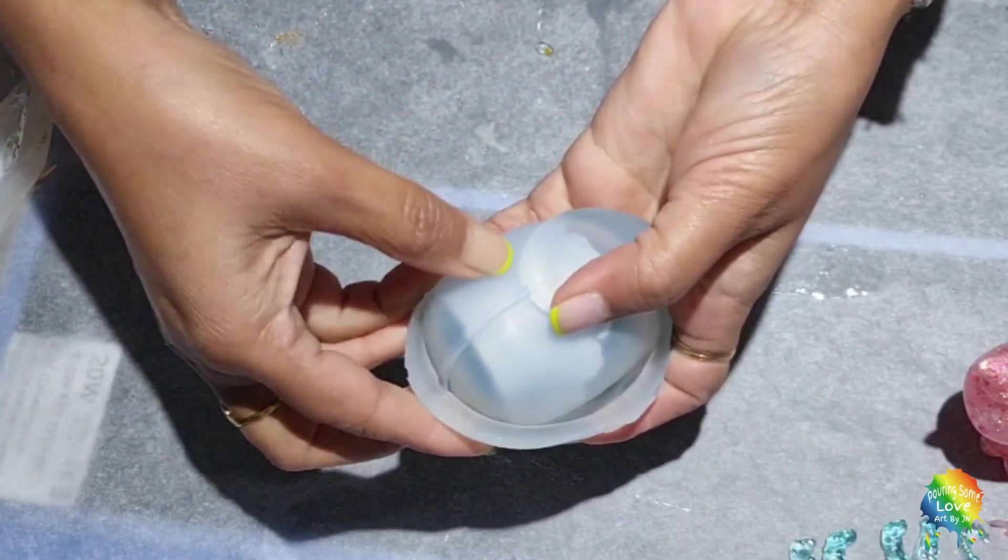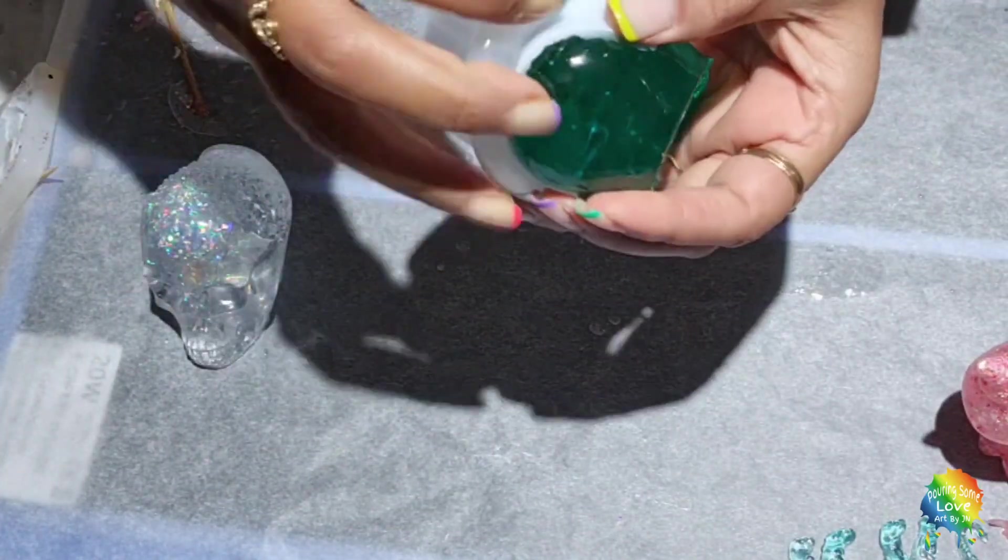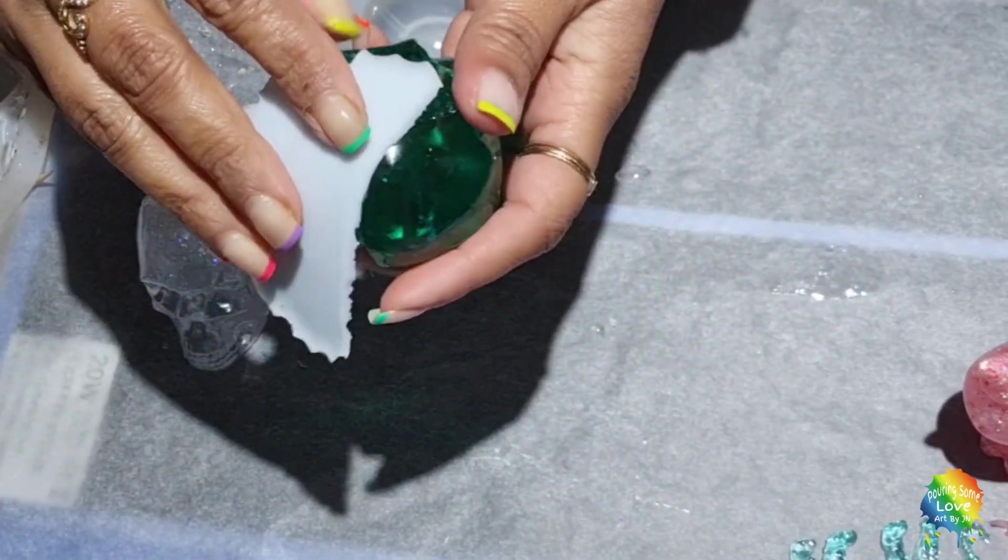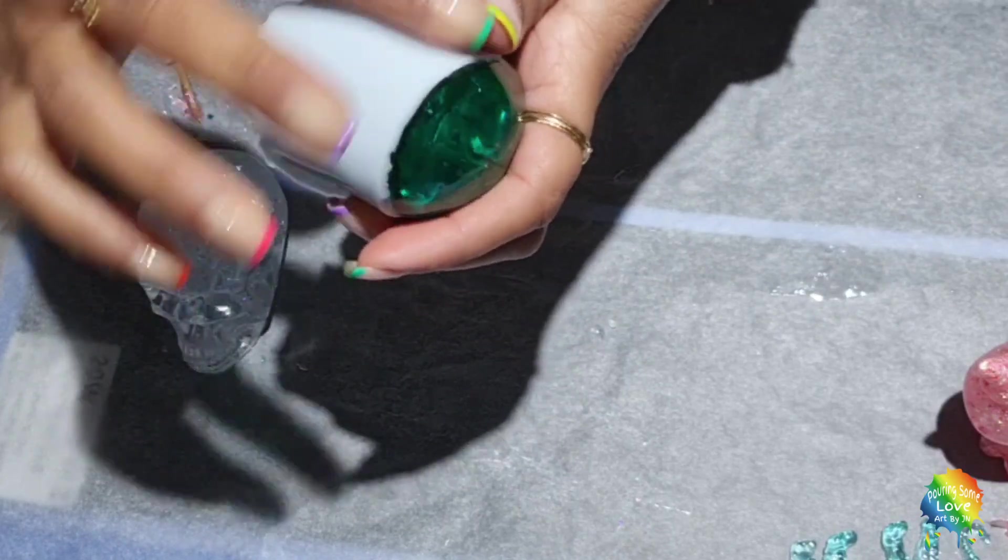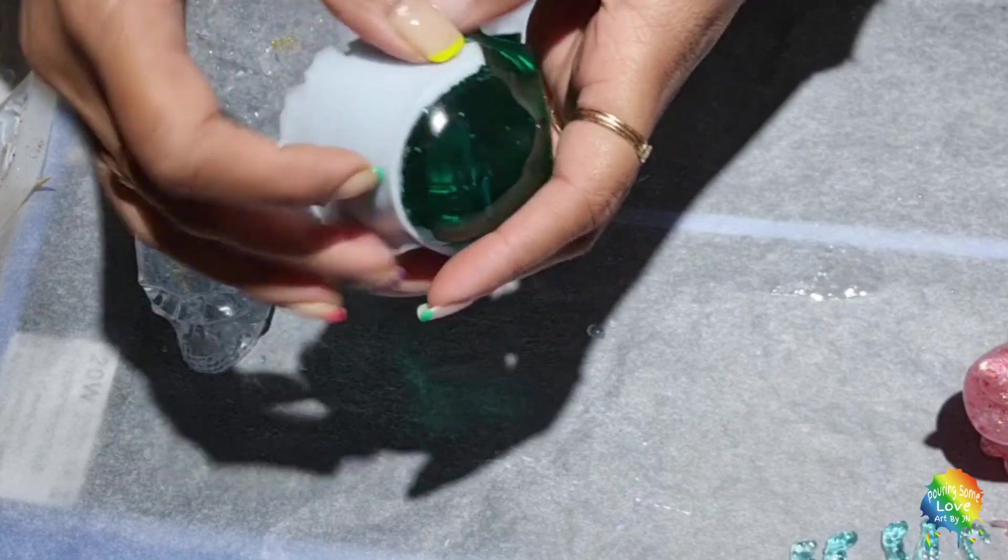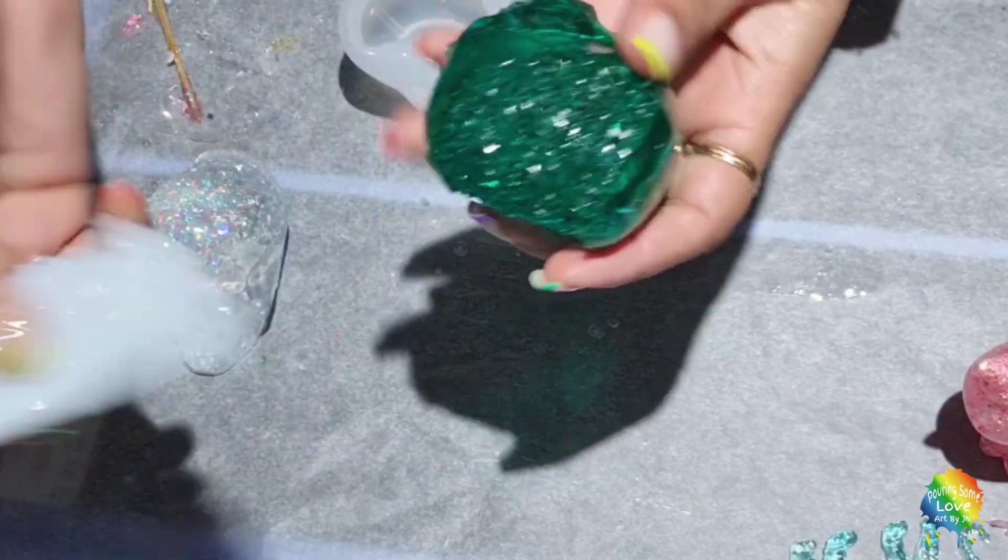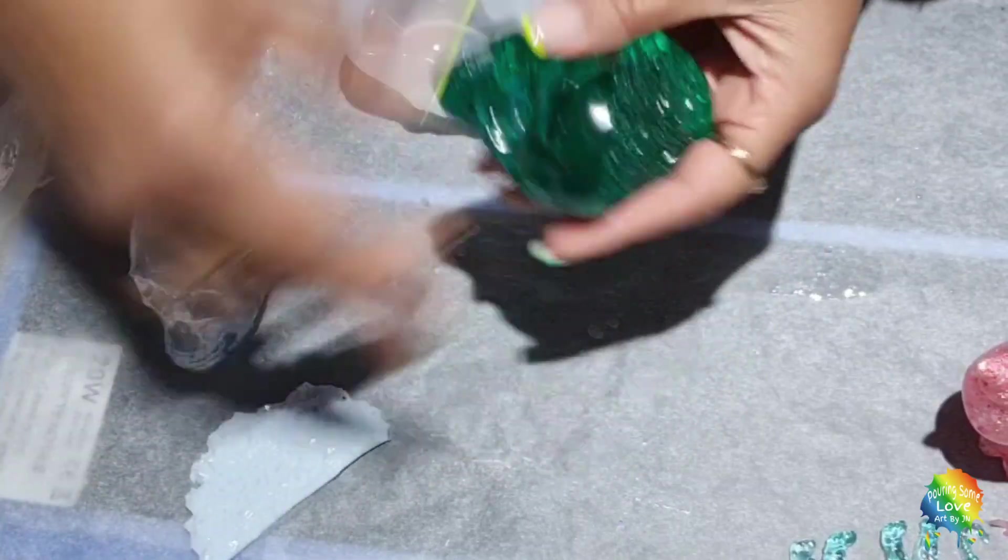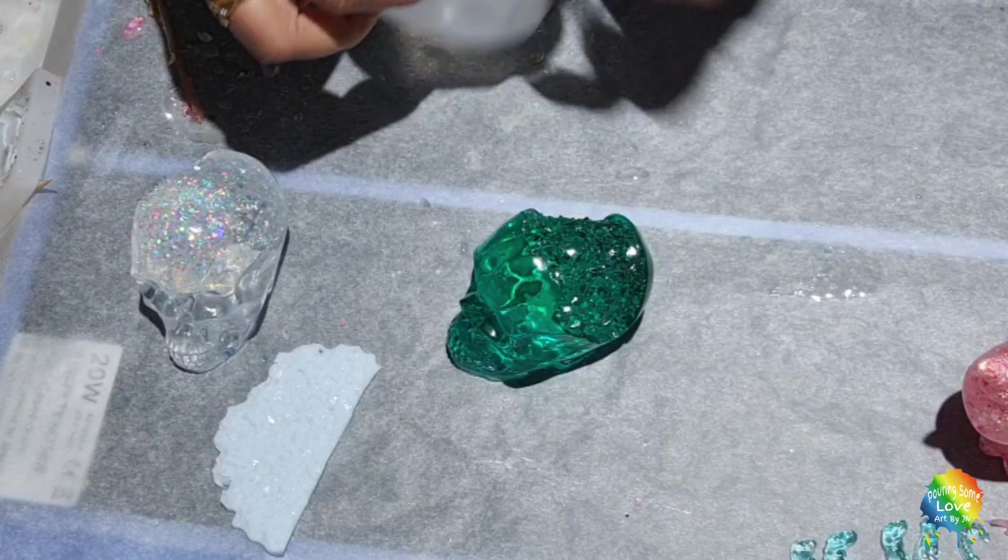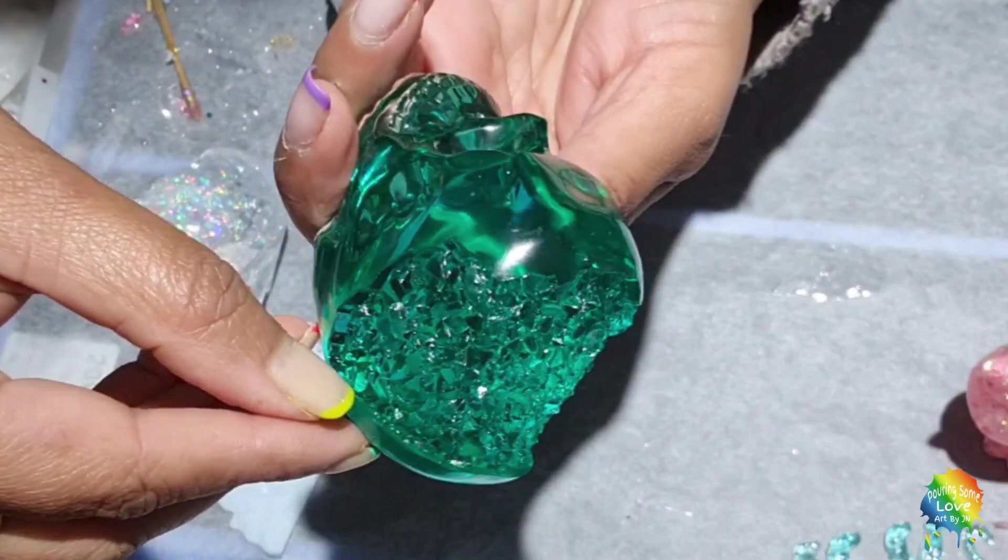You can see the resin mold there and it's coming off. Sometimes what happens is I do have resin stick here as well, so what I do is just pull it off and it comes off easily. Then you can take your insert out because both are silicone, so it's not that hard to get the resin off. You can see how deep it has gone.